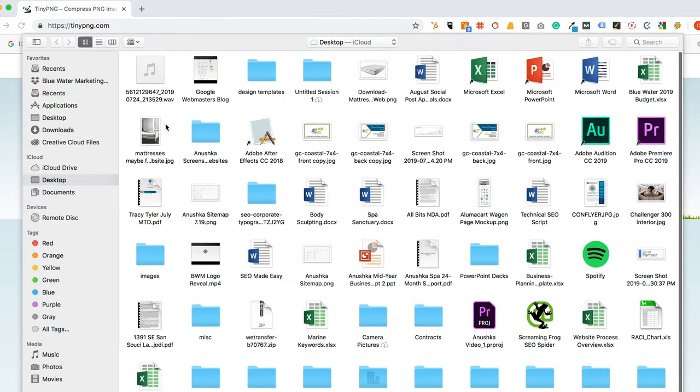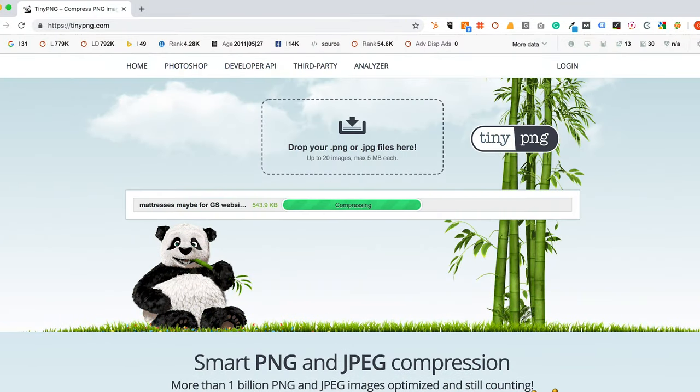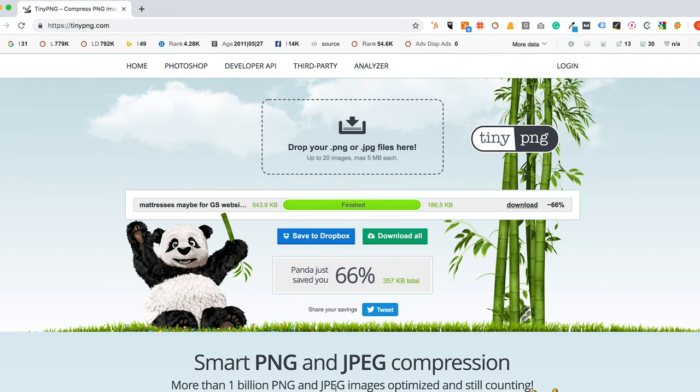Upload those images to the compressor, compress the image, and then download them. Once you download them, upload them to your website. Add your alt text, place them in the correct location, and voila! You're done!